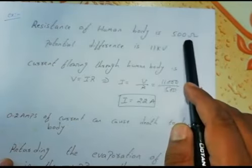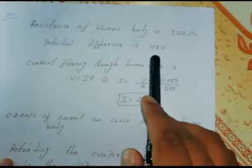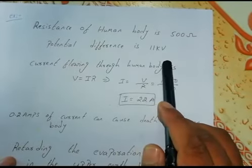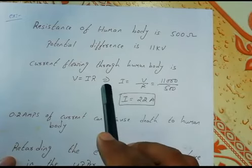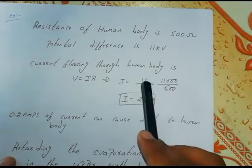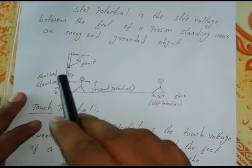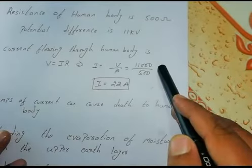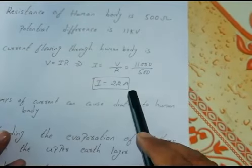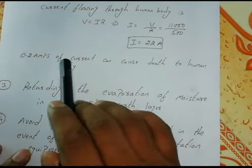The resistance of a human body is around 500 ohms — this is a typical example. Now suppose when the person has touched the equipment, there is a potential difference of 11 kV. As you know, I equals V divided by R. So for a 33 kV or 66 kV line, suppose there is a voltage difference of around 11 kV divided by 500 ohms — there is a current of around 22 amps flowing through the body.